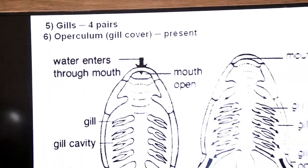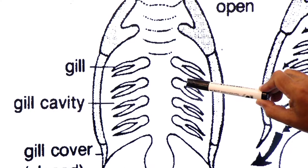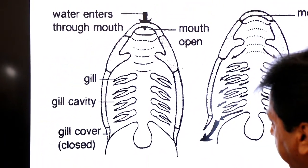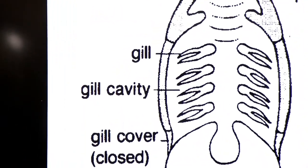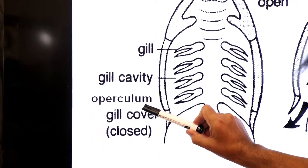Dear students, as I said, four pairs. Now you see here: one, two, three, four. One, two, three, four. Four pairs of gills are found. This gill cover is known as operculum. This gill cover is known as operculum.